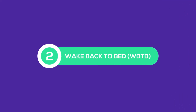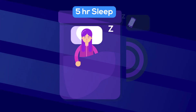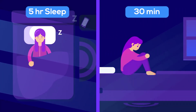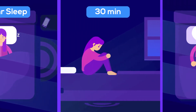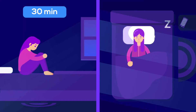Wake back to bed: set an alarm to wake up after 5 hours of sleep, stay up for 30 minutes, then go back to sleep. This method allows you to directly enter REM sleep while you are still in a state of alertness.